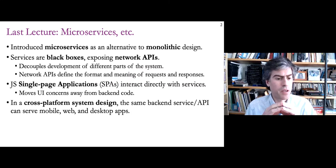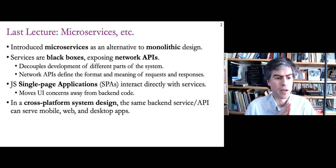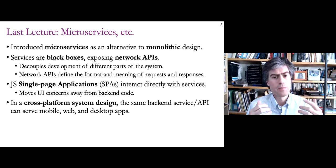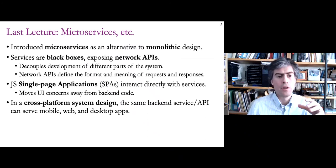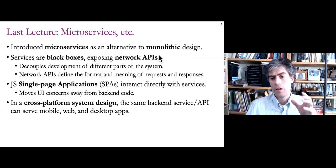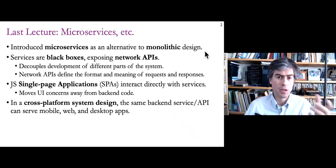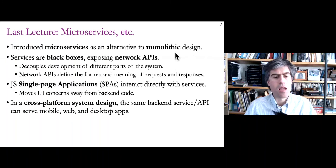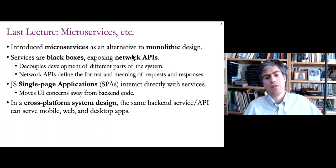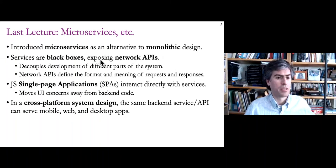Last time we talked about microservices and a few other topics like single page applications and cross-platform designs. The main idea was that a service can be composed of not just one code base, but many different components that interact through network APIs. A design with just one application, like the Wikipedia MediaWiki design, is called a monolithic design. An alternative is to break your code base into little pieces called microservices.